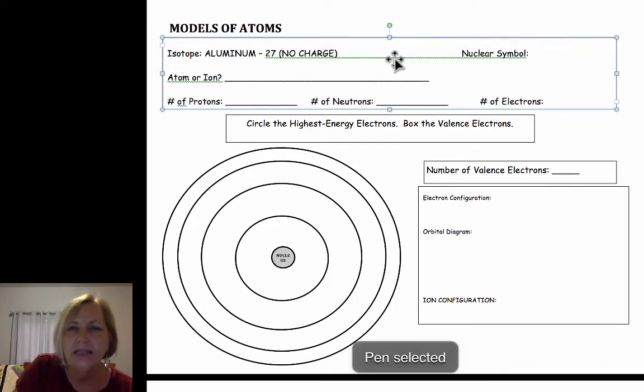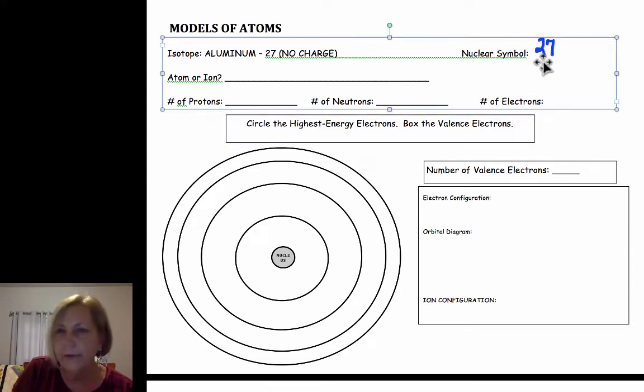The hyphen 27 tells me the specific isotope we're talking about. The atomic number of aluminum is 13 and its symbol is Al. That's its nuclear symbol or chemical configuration with no charge. Since it has no charge, it's an atom not an ion.